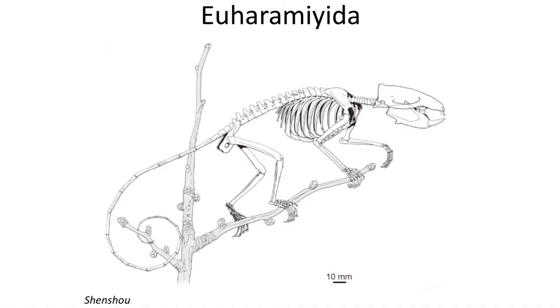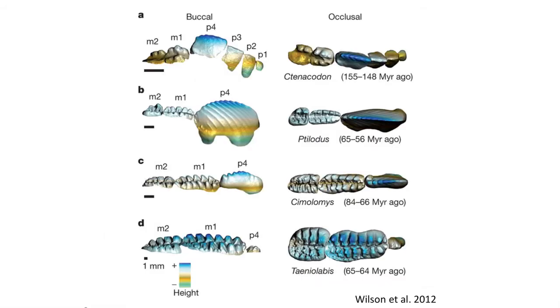Some people have suggested that the Euharamiyida are a much more primitive branch on the mammalian tree. However, there are two major characters that they all have in common: all members of the Allotheria have large incisor-like teeth and multicuspid molars, which feature rows of cusps.